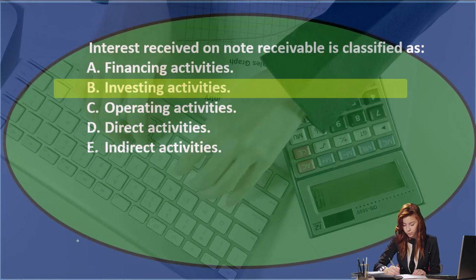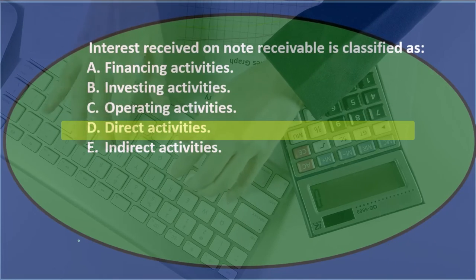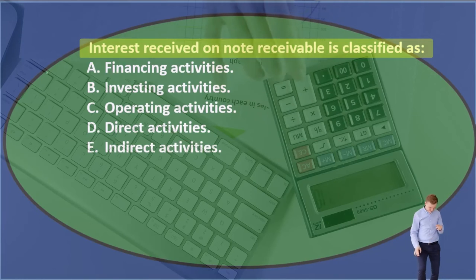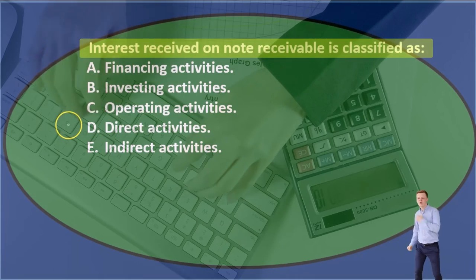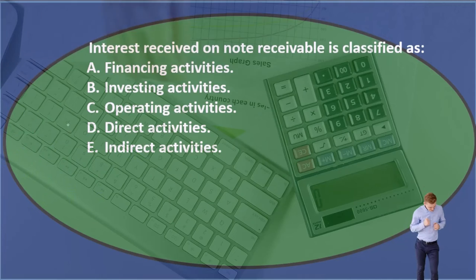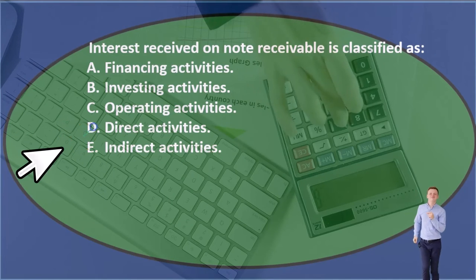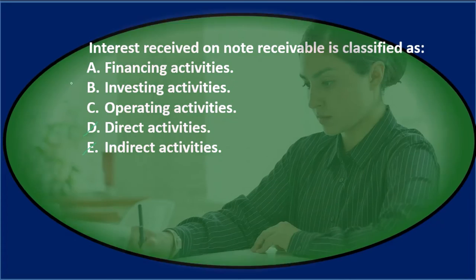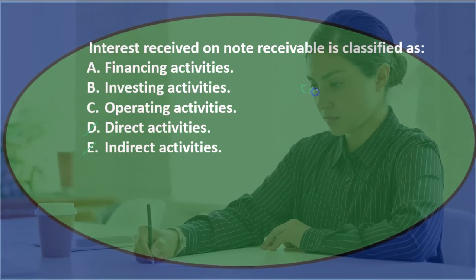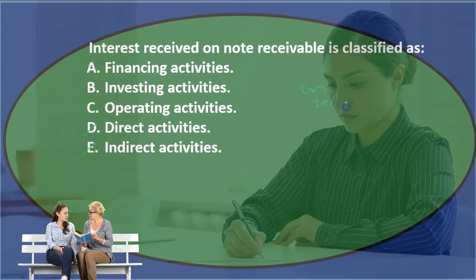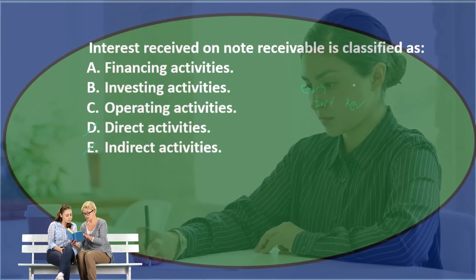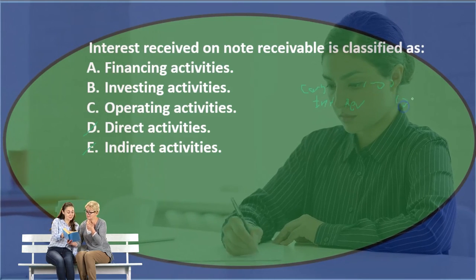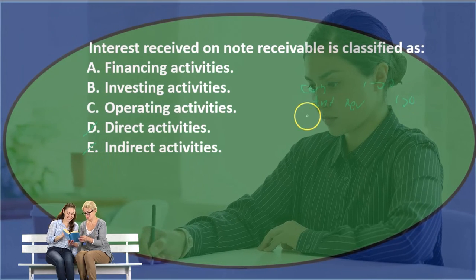Question 4: Interest received on a note receivable is classified as — A) a financing activity, B) an investing activity, C) an operating activity, D) direct activities, or E) indirect activities. Options D and E can be eliminated immediately since they are not among the three main categories of the statement of cash flows. The journal entry here would be a debit to cash and a credit to interest revenue.